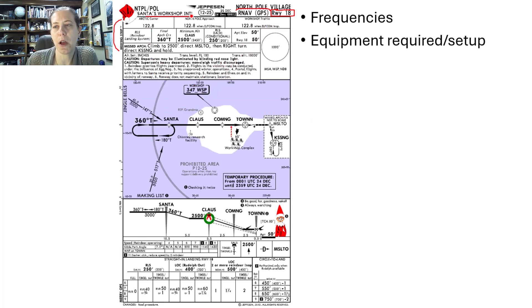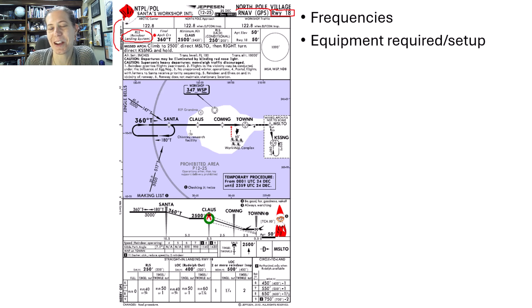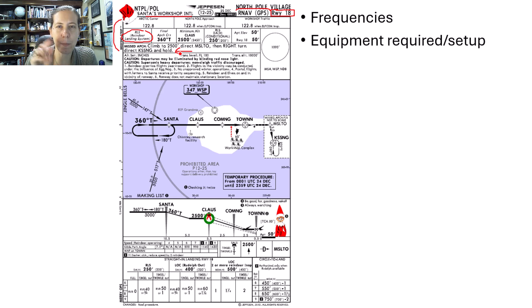This section prompts me to set up all my equipment. I do not know what the reindeer landing system is, but that's generally where we would have notes about the equipment required for this approach. The briefing strip also includes important things like my final approach course, the minimum altitudes, and a little overview of the missed approach.